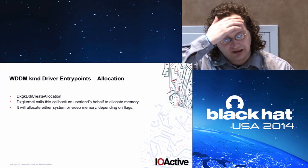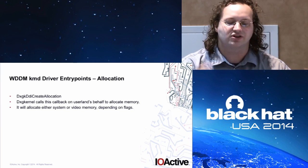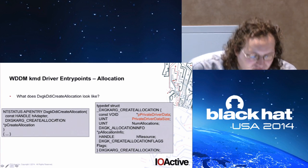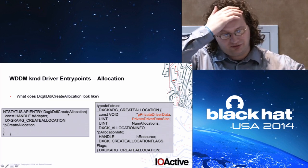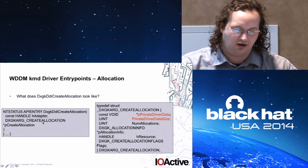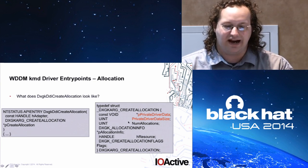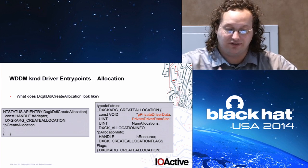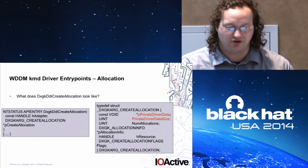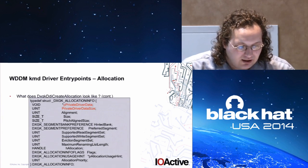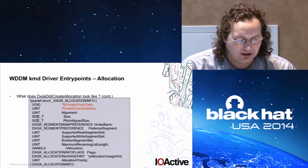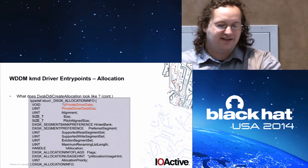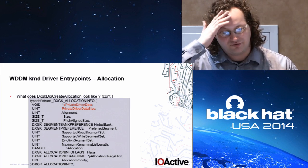The allocation callback DXGKDDI_CREATE_ALLOCATION handles allocating memory — either system memory or video memory — on user land's behalf. The structure passed contains things you have little control over as an attacker, but also contains a private_data pointer and private_data_size — attack surface. The data is completely controlled by user land. There's also a second structure, p_allocation_info, where you can have a list of allocations each with their own private data size. So you have a private data size and a list of private data sizes — all attack surface going to one system call.